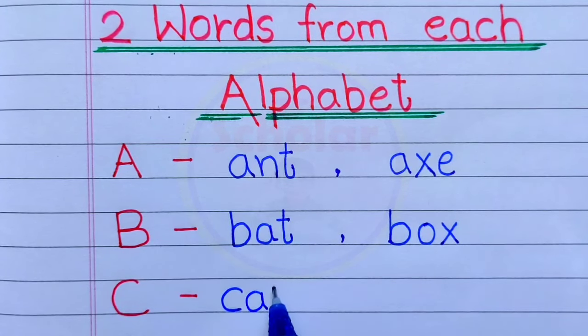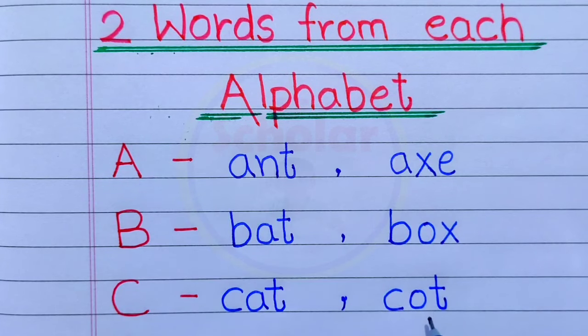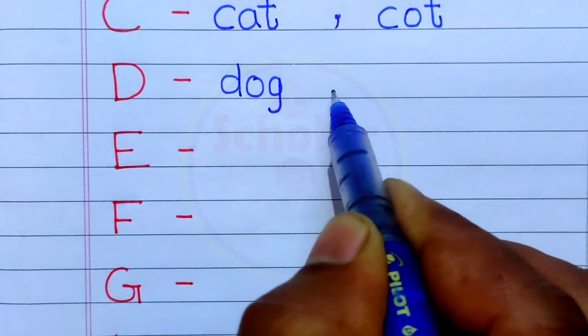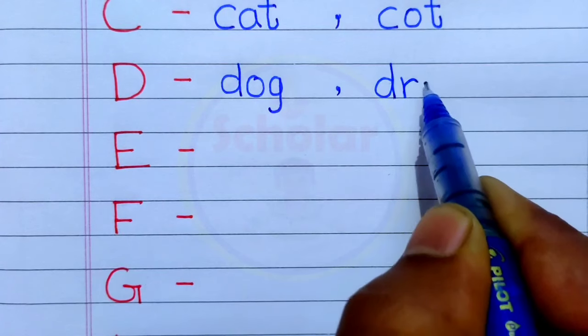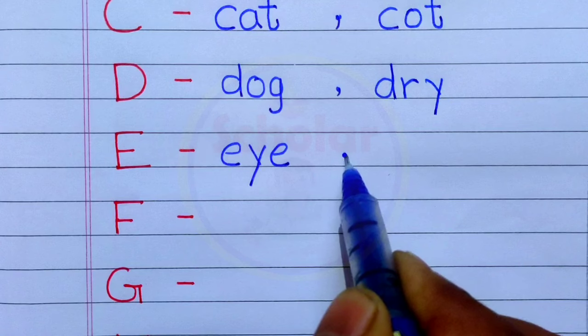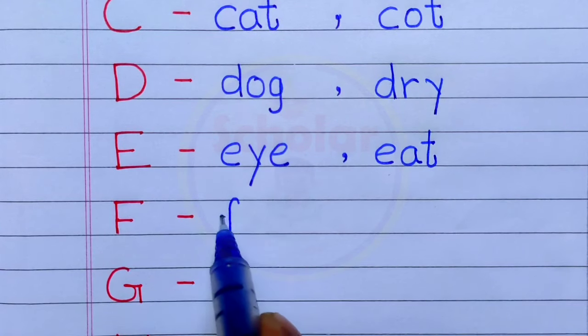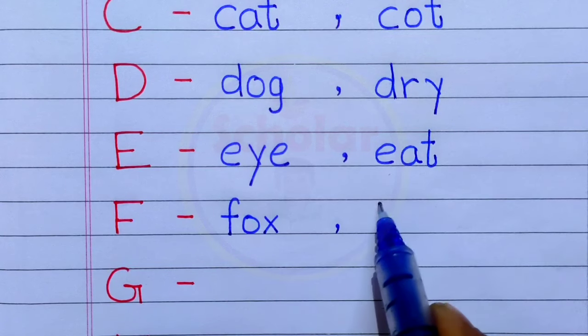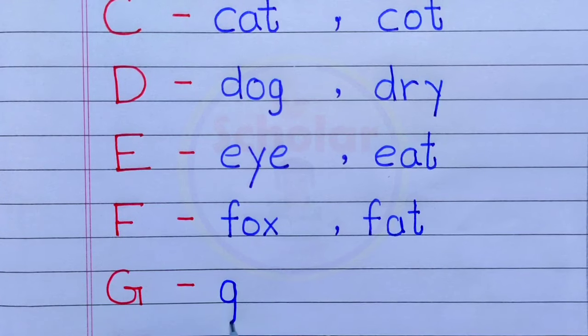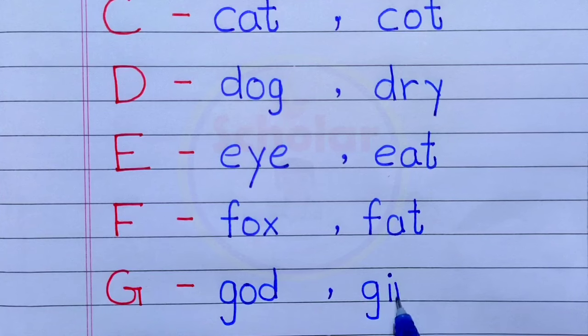C - Cat, Cot. D - Dog, Dry. E - Eye, Eat. F - Fox, Fat. G - Guard, Girl.